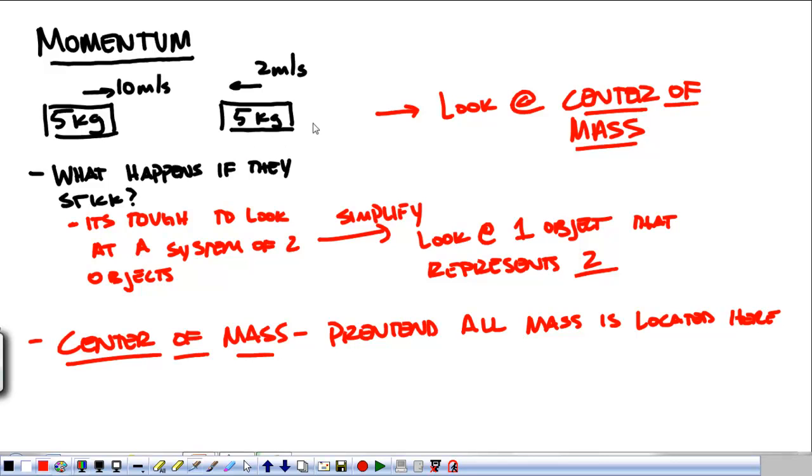So for these two objects, instead of looking at them like a 5-kilogram object doing something and a 5-kilogram object doing something, we could look at it like a 10-kilogram object doing something with some velocity. We'll get to that. But it simplifies it because I can describe one object very well.